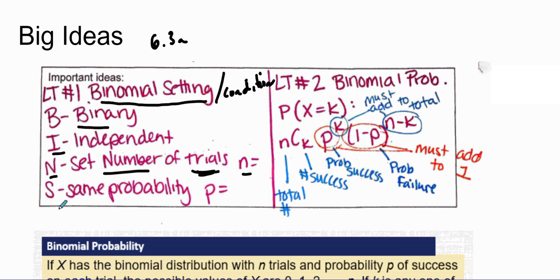The same probability each time - that's what makes it kind of independent. The probability does not change as you go through each trial of the event. Together we have this acronym called BINS: B for binary, I for independent, N for number of trials, and S for same probability.